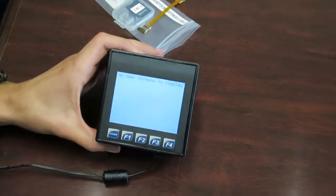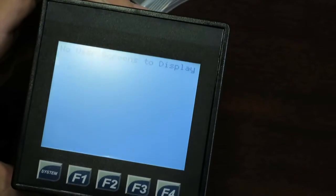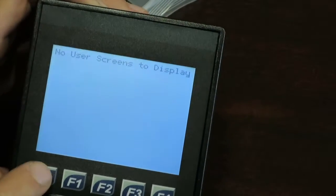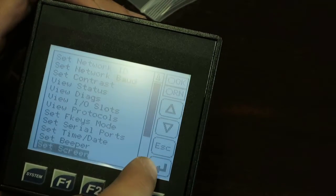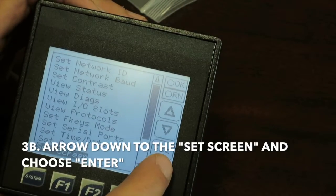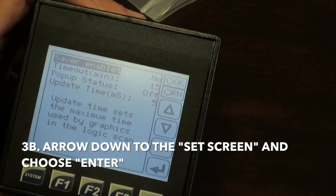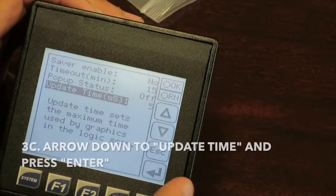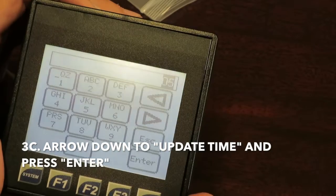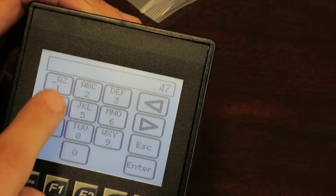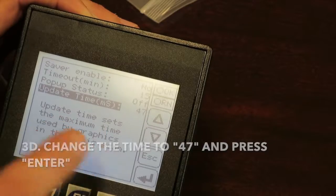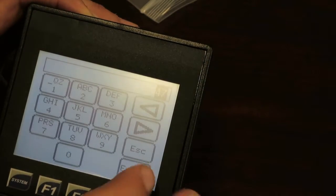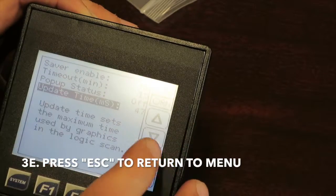Now, we've got to update a few things on the sterilizer now that the internal memory has been reset. First, we're going to press the system button, and then we're going to arrow down to the set screen. Press the enter button. And we're going to change the update time. So we're going to arrow down to update time and press enter. We're going to change this to 47. Press enter. Now the screen update time has been changed. I can press escape now to get out of changing this update time.